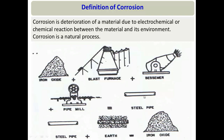The practical definition of corrosion is: it is the tendency of a material to revert back to its natural state. Since it is a natural process, we can't avoid it entirely — we can only reduce the rate of corrosion. Scientifically, corrosion is the degradation of a material due to electrochemical or chemical reaction between the material and its environment.